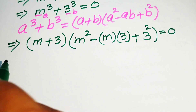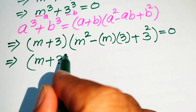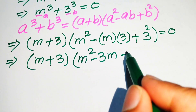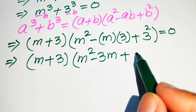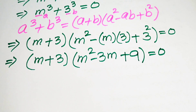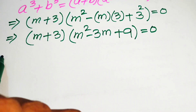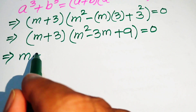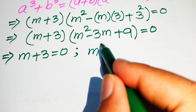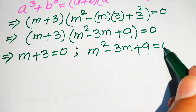With simplification, we write it as (m plus 3) times (m squared minus 3m plus 9) equals 0, since 3 squared equals 9. To solve further we split this into two cases: Case 1 is m plus 3 equals 0, and Case 2 is m squared minus 3m plus 9 equals 0.